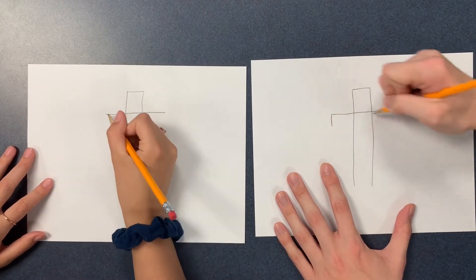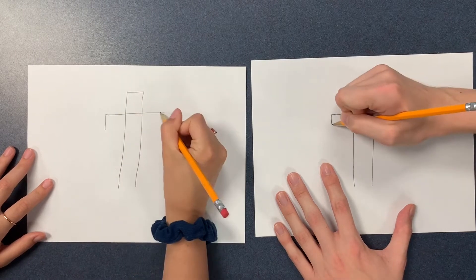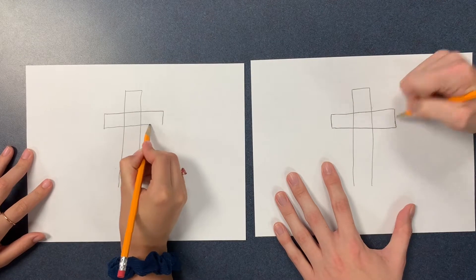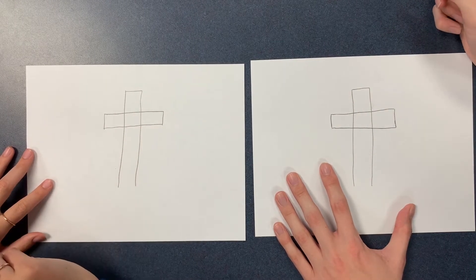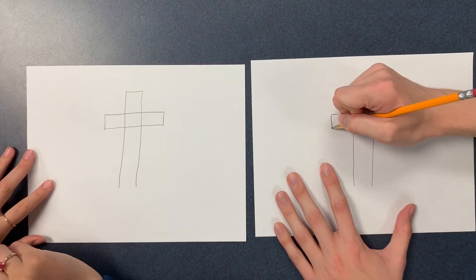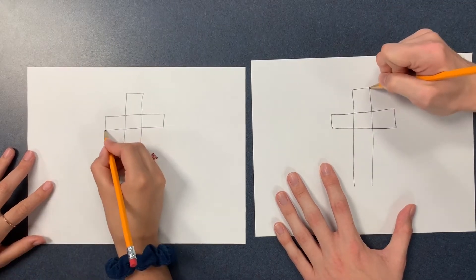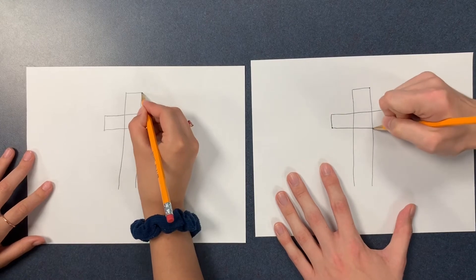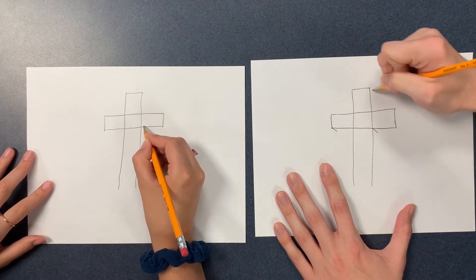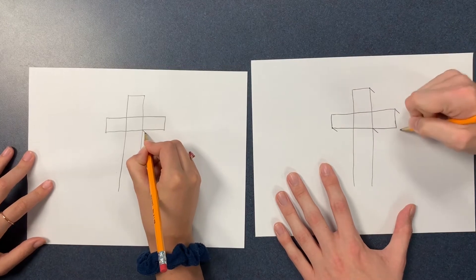And then you're gonna draw two lines down. From this point, this point, and this point, and this point, we're gonna do a line down kind of at an angle.